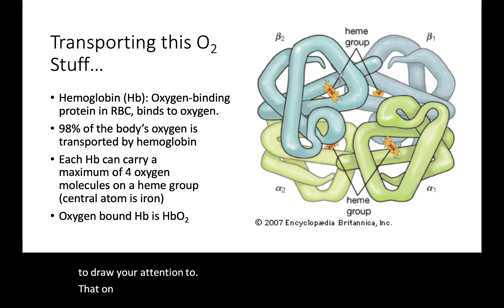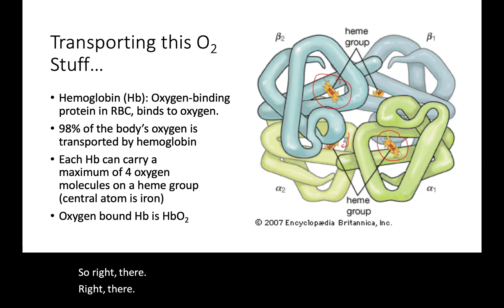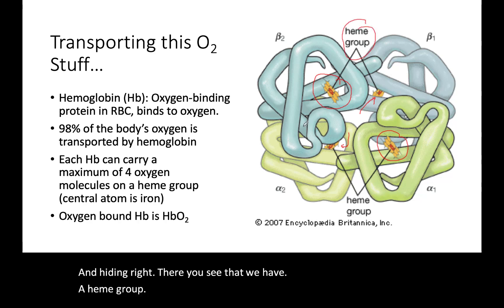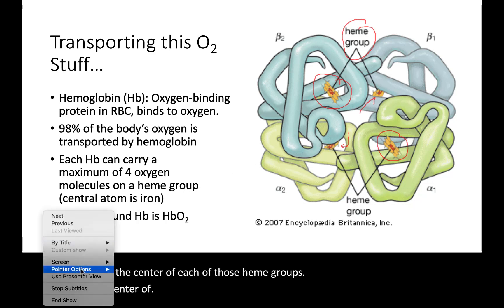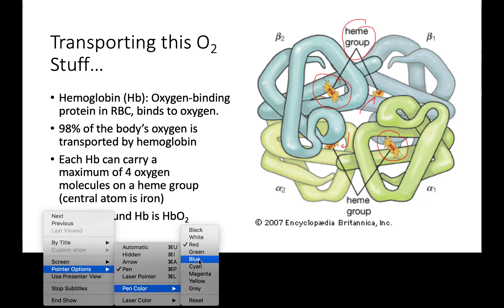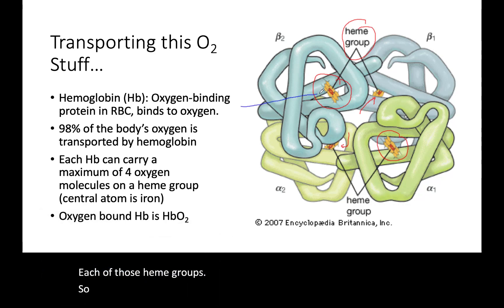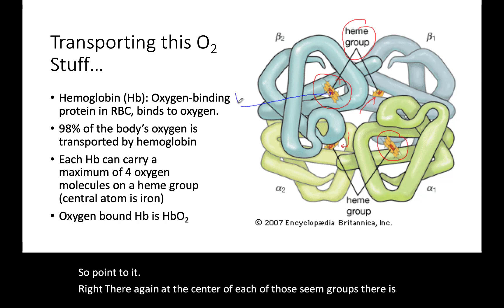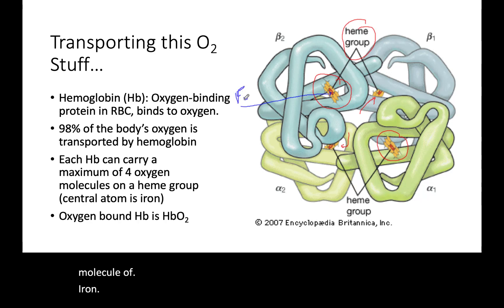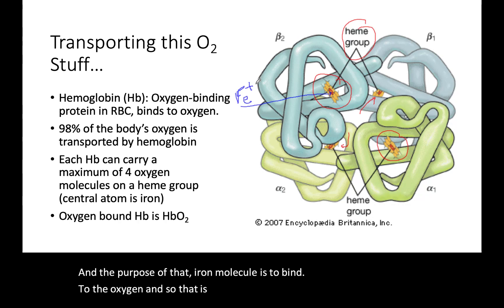On each of these chains there is a heme group, and at the center of each of those heme groups there is a molecule of iron — Fe²⁺. The purpose of that iron molecule is to bind to the oxygen, and so that is where the oxygen is binding.